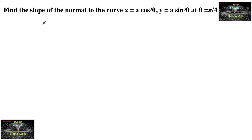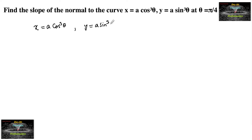Find the slope of the normal to the curve where x is equal to a cos cube theta and y is equal to a sin cube theta. The curve equation is given in parametric form in terms of theta.